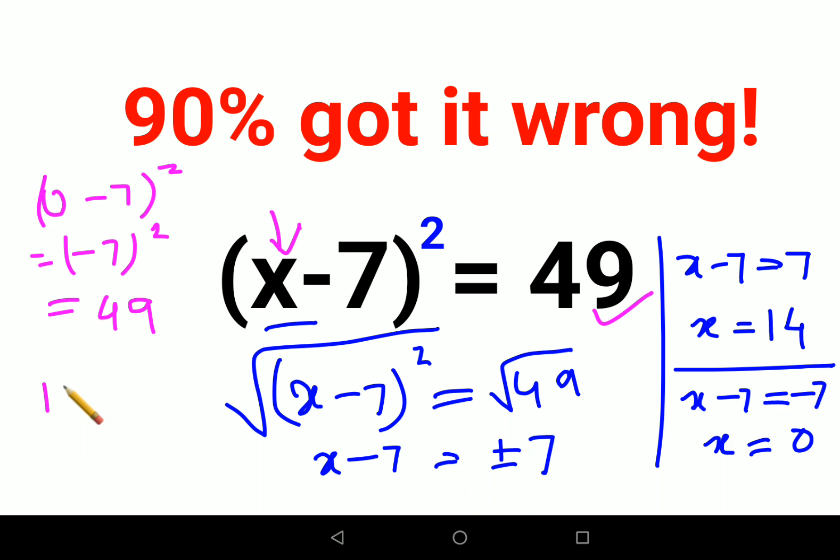And if we put the value of x as 14, (14 - 7)² equals 7², which is 49. That is also correct.